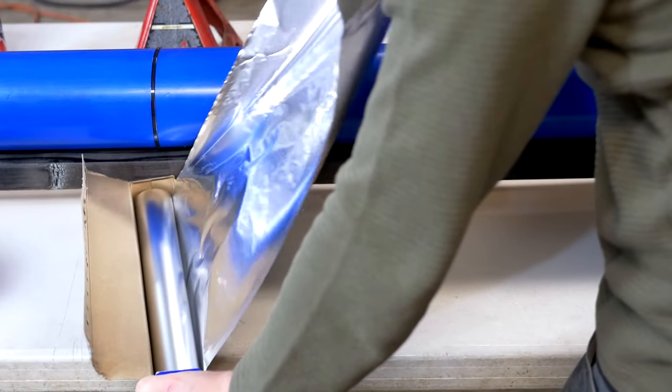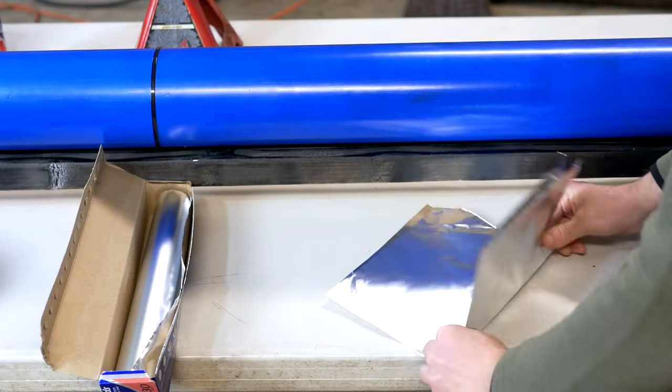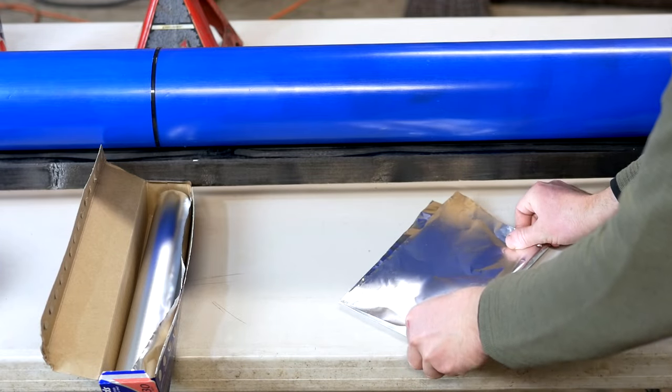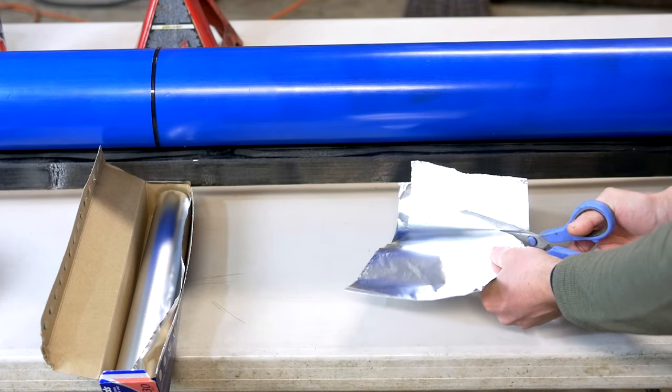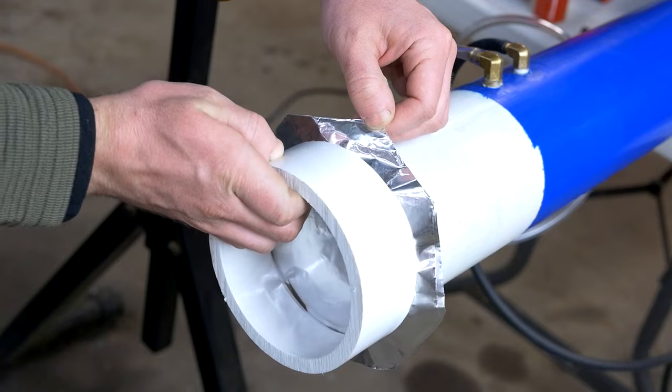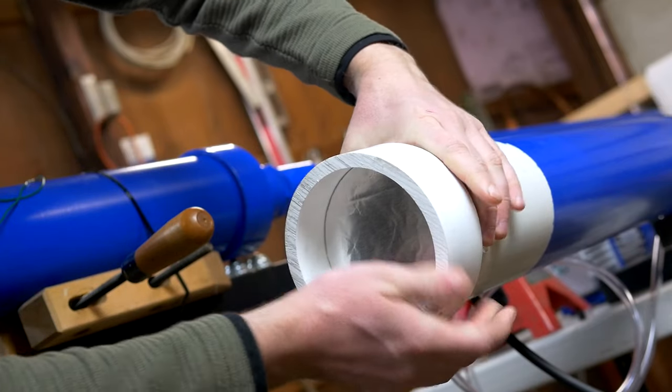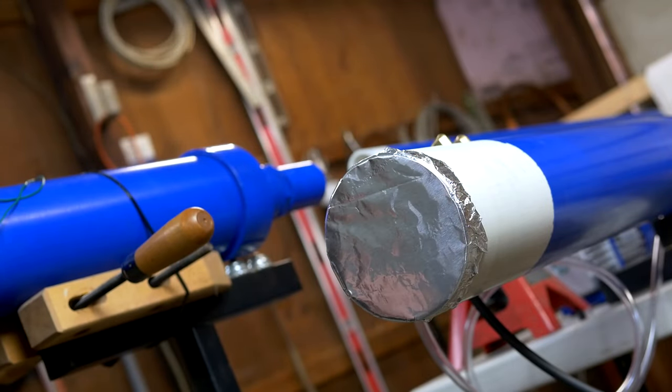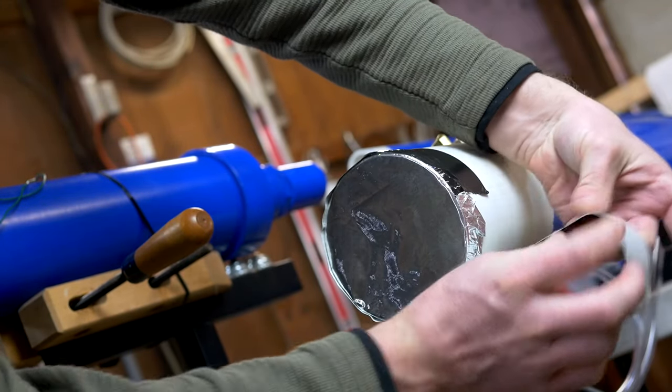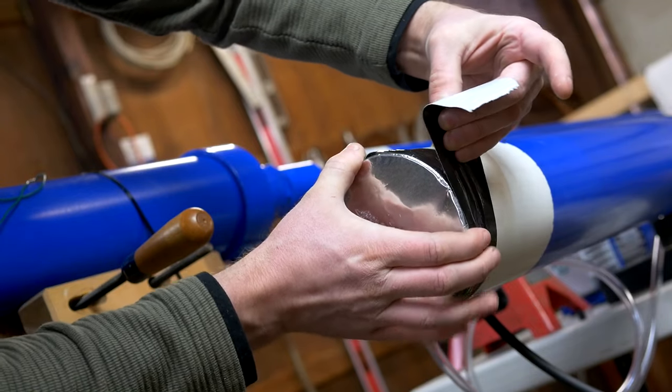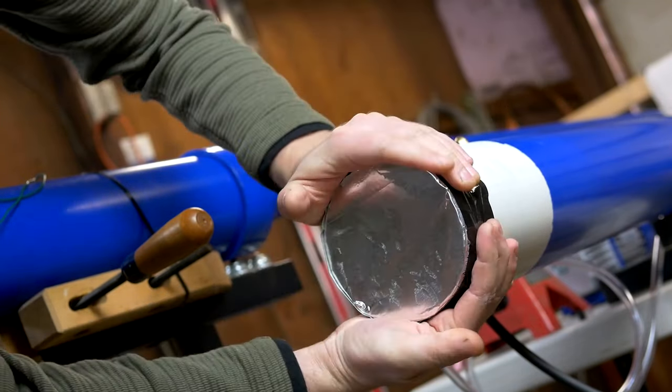A vacuum cannon uses what is called a burst disc on both ends. In this case, the discs are made of four layers of heavy aluminum foil, pressed with a coupling over the end of the pipe to properly form them into shape. The coupling is only temporary to help pull the foil tight and fold the edges over. To hold the burst discs in place while the cannon is used, the foil is secured with duct tape.